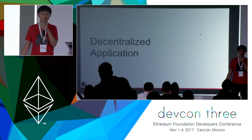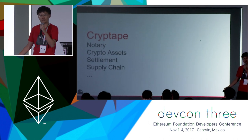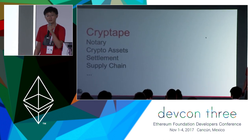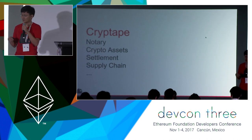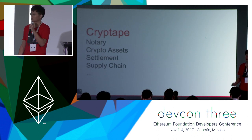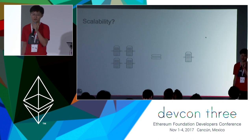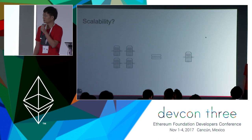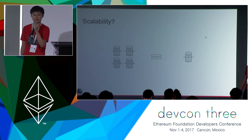With the advent of Ethereum, we can build decentralized applications very easily. At Cryptape, we provide all kinds of consultancy services to our customers, including notary, crypto assets, and supply chain settlement. We built all kinds of prototypes, but the most common question we've been asked by our customers is: does the solution you build for us scale? What if the blockchain application becomes super successful and there are a lot of users? All of us know blockchain has its own scalability problem.